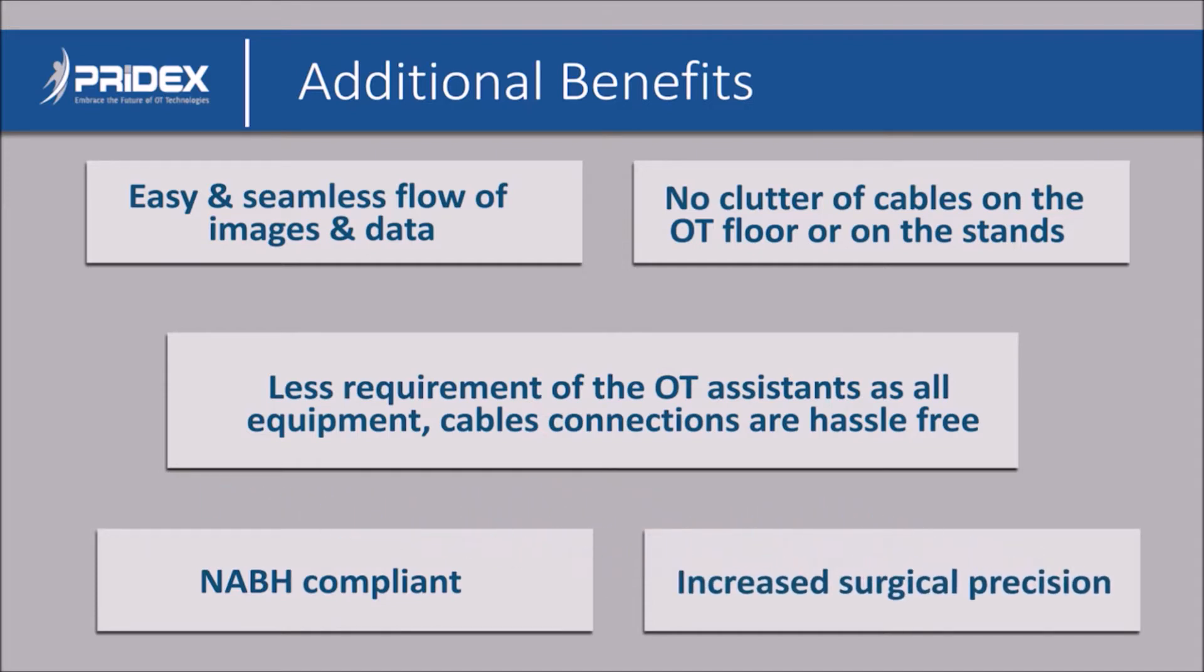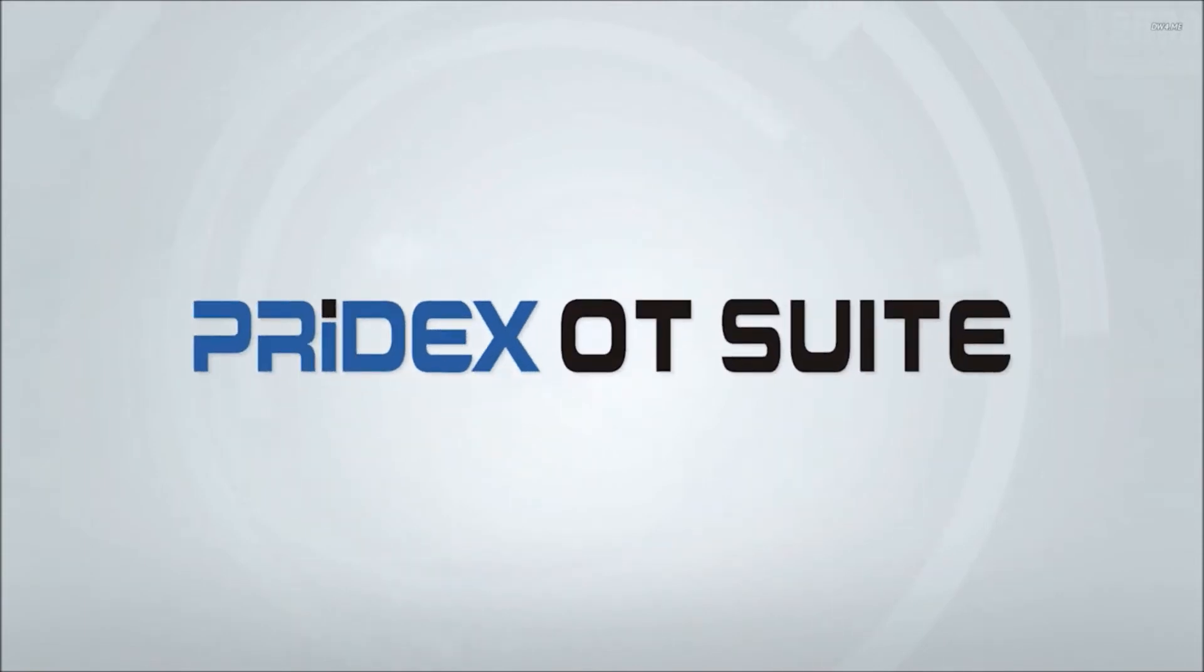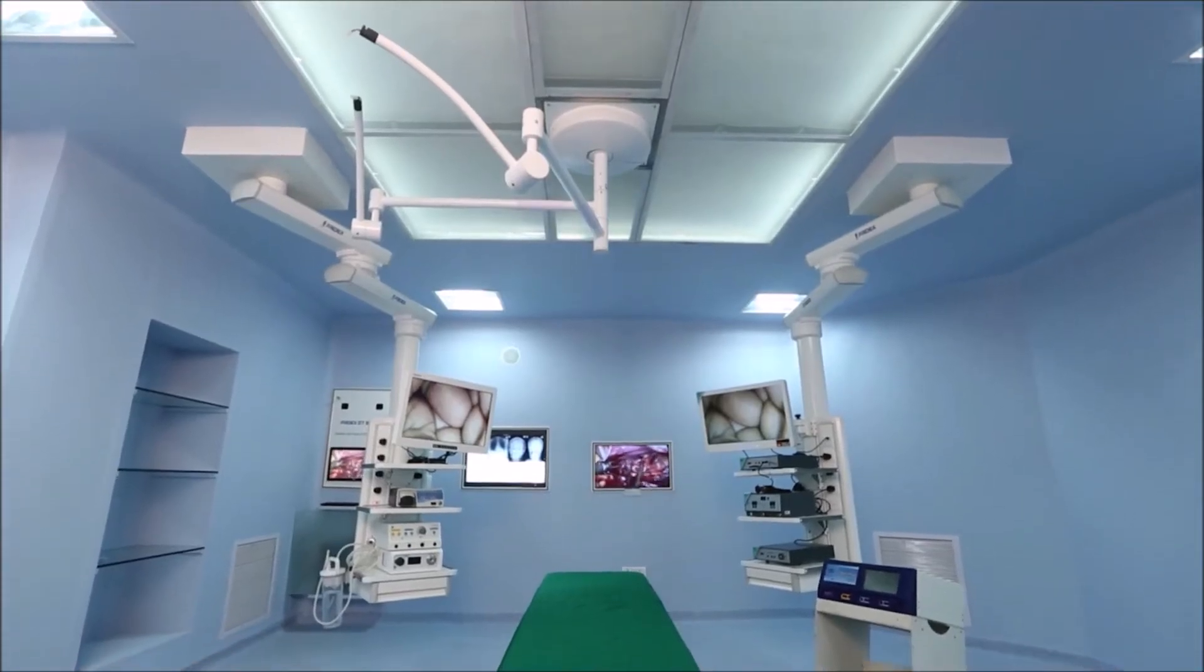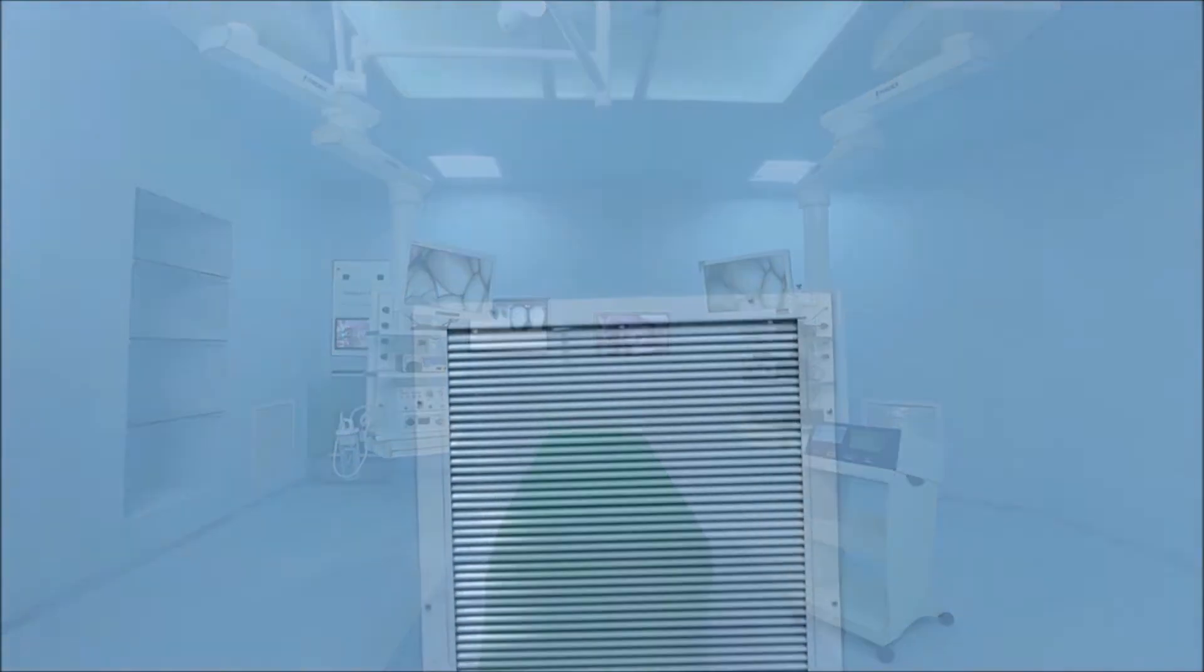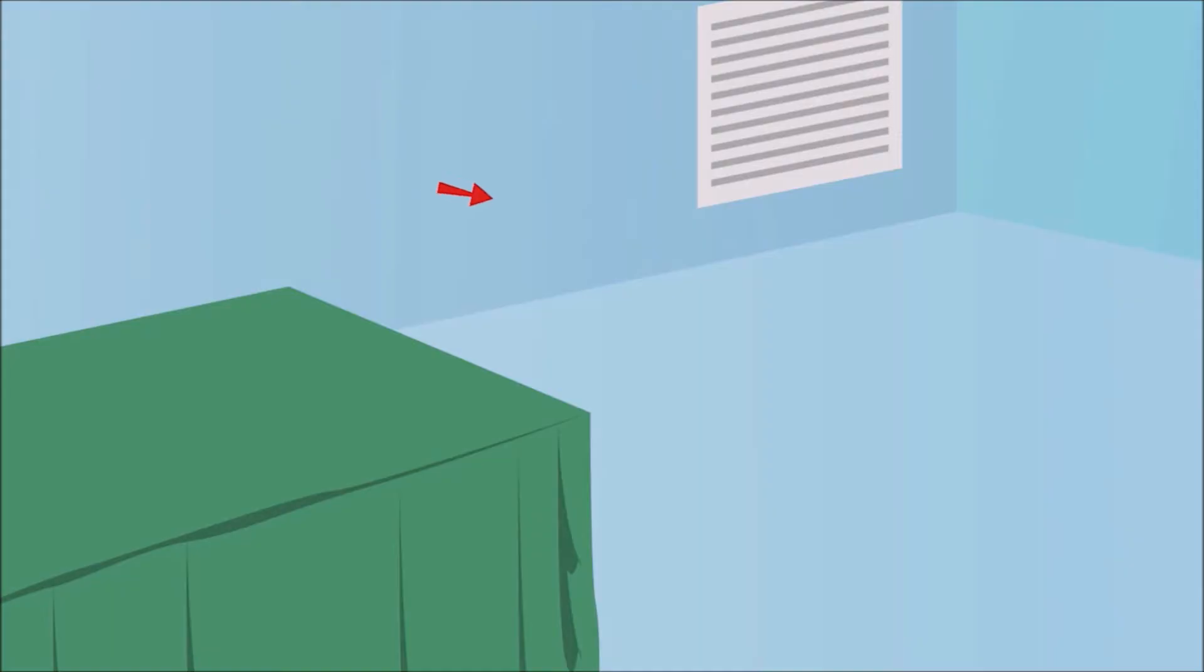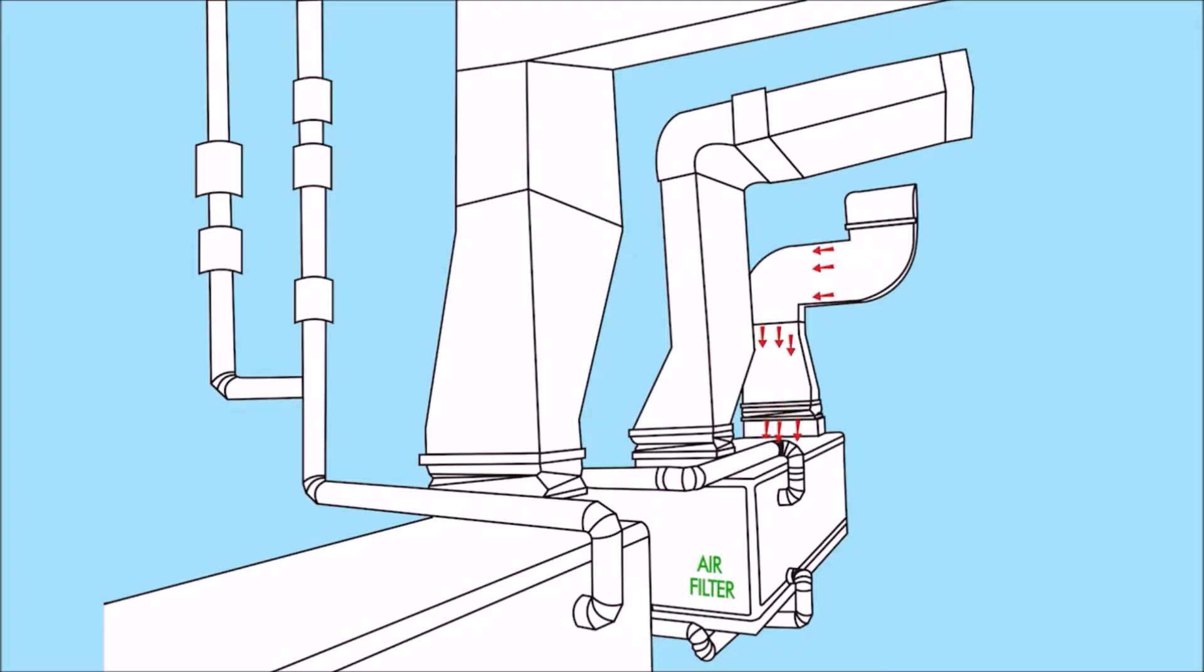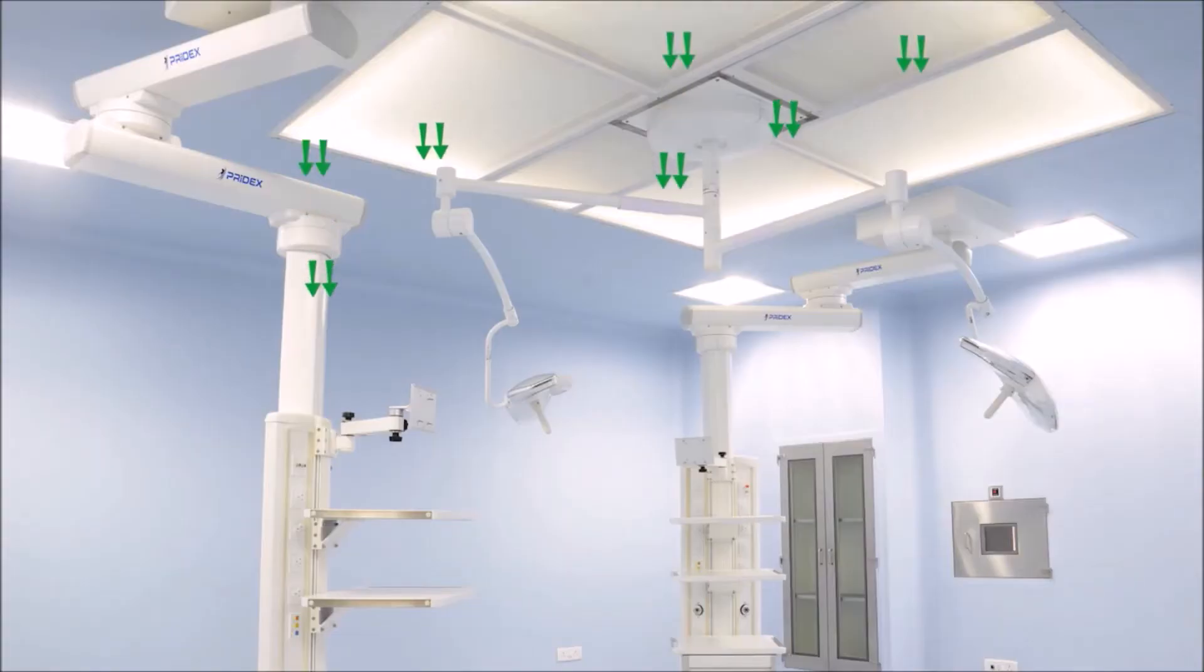Now let's explore the unique offerings by the Pridex OT suite. Laminar airflow: controlled air supply of class 100 with parameters specified by NABH guidelines. The air passing through the exhaust comes to this unit and passes through different filters for purification. The pure air is then sent to the OT room with specified velocity and with required air changes per hour.